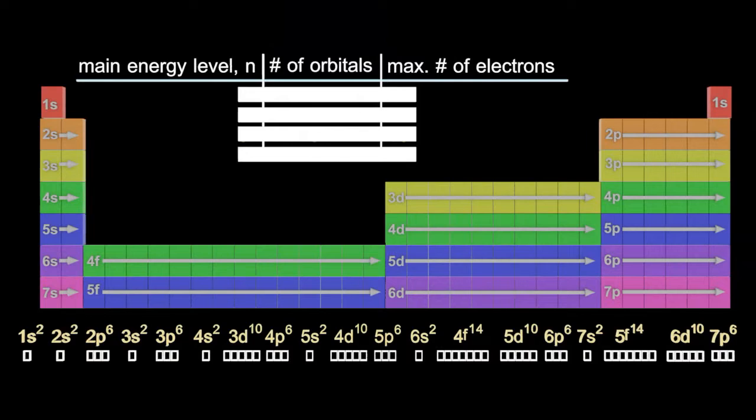And what does the IB want you to know? Well it wants you to know how to calculate the number of orbitals and the maximum of electrons given the main energy level, n.